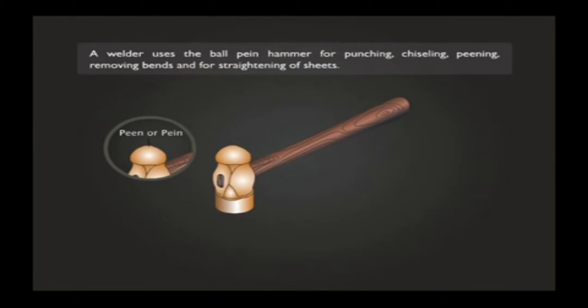A welder uses the ball peen hammer for punching, chiseling, peening, removing bends, and for straightening of sheets.